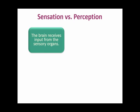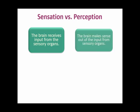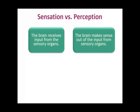In sensation, the brain is going to receive information from your sensory organs — eyes, ears, nose, and so on. In perception, the brain is going to make sense out of that input.